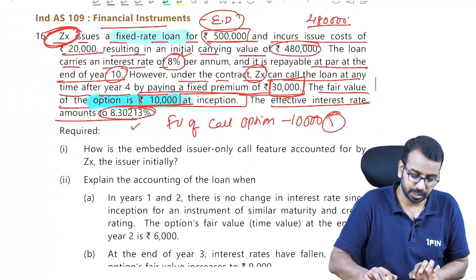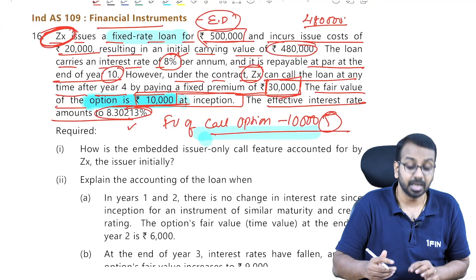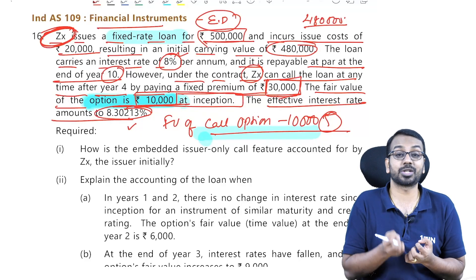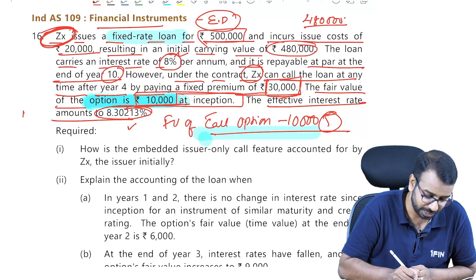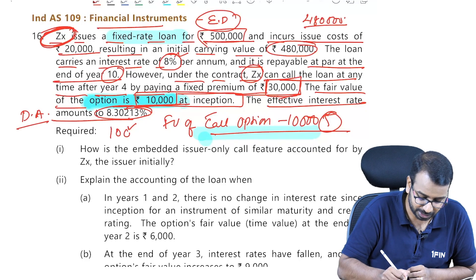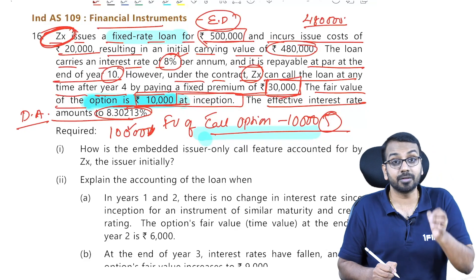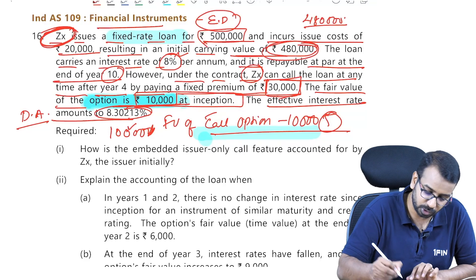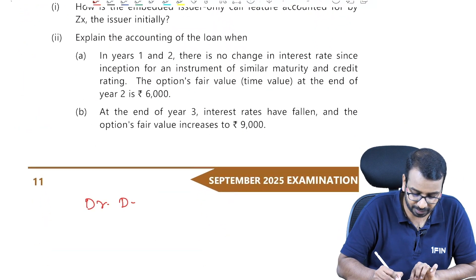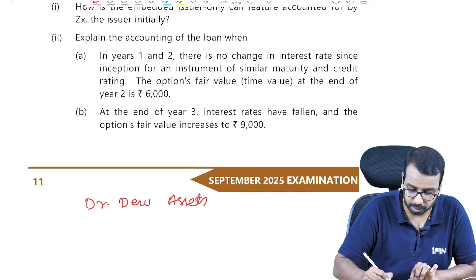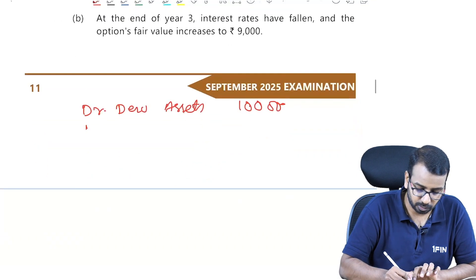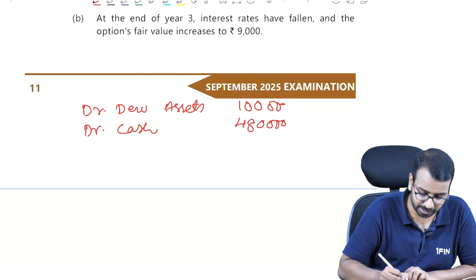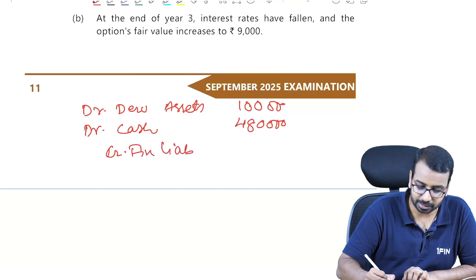We will account for these as separate contracts. The fair value of the call option is one contract. For the holder of the option, it is a derivative asset — holding the option gives a right, and that becomes a derivative asset of 10,000. The net proceeds from the loan are 4,80,000. So we got a derivative asset of 10,000 and cash or bank of 4,80,000. Hence, the financial liability will be 4,90,000.